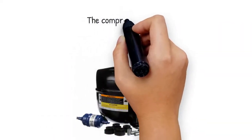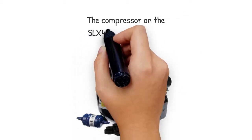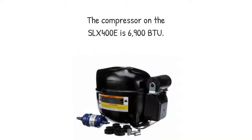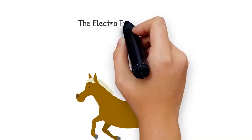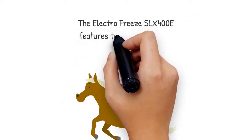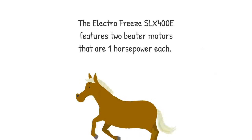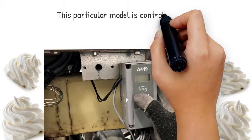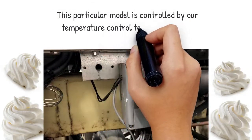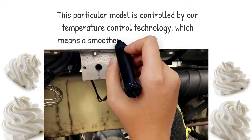The compressor on the SLX400E is 6900 BTU. The ElectroFreeze SLX400E features two beater motors that are one horsepower each. This particular model is controlled by our temperature control technology, which means a smoother and creamier product.